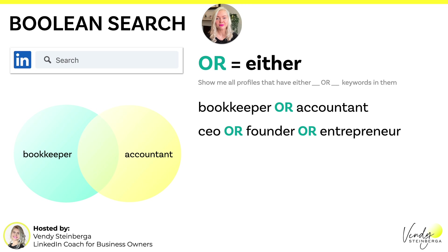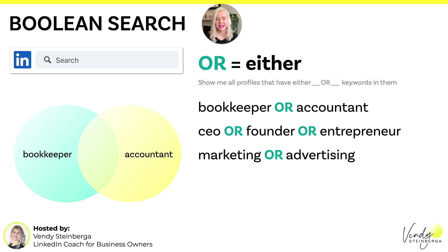It's important to know that they don't have to have both keywords in one profile — it is enough that they have either one or the other. Another example: you might be looking for CEOs or founders or entrepreneurs. They don't have to have used all three keywords in one profile, but if they have one of these keywords in a profile, it would get returned in the search results. You could also say marketing OR advertising. It's very important to know that you must use capital OR for this search to work — it applies to all Boolean operators. You must use capital letters.